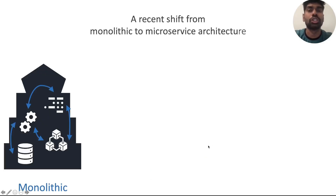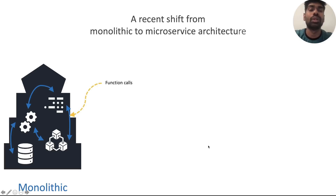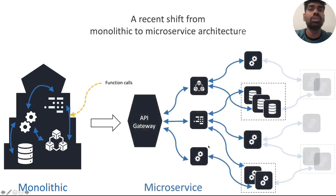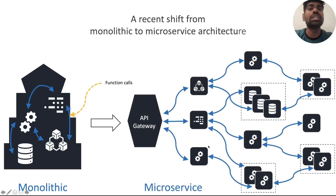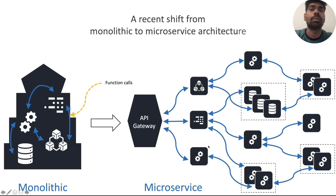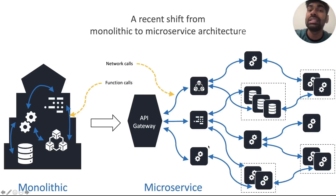Let's start with a simple observation of how software has evolved. Software used to exist like a monolith where different components talk to each other through function calls. Today, for reasons like better scalability and easier deployment, they're slowly moving to a microservice-style architecture where different modular pieces of the system software are developed independently and talk to each other not through function calls but through network calls. This means that network communication has now become quite intrinsic to an application's functioning.